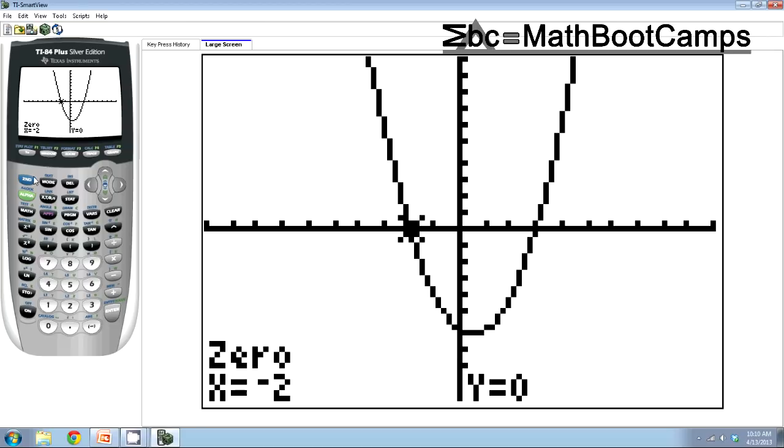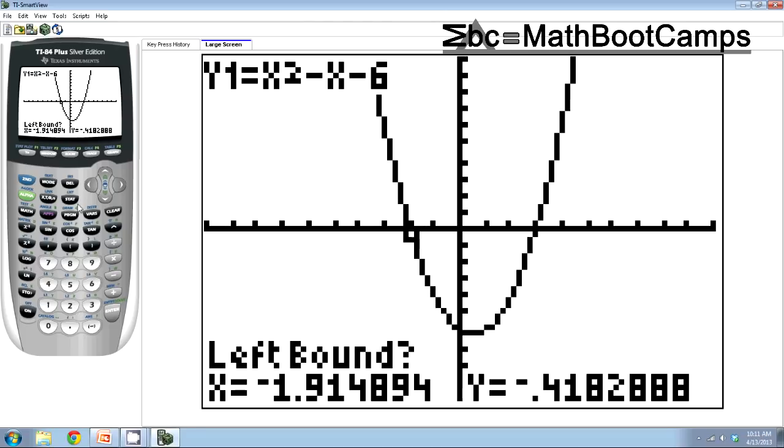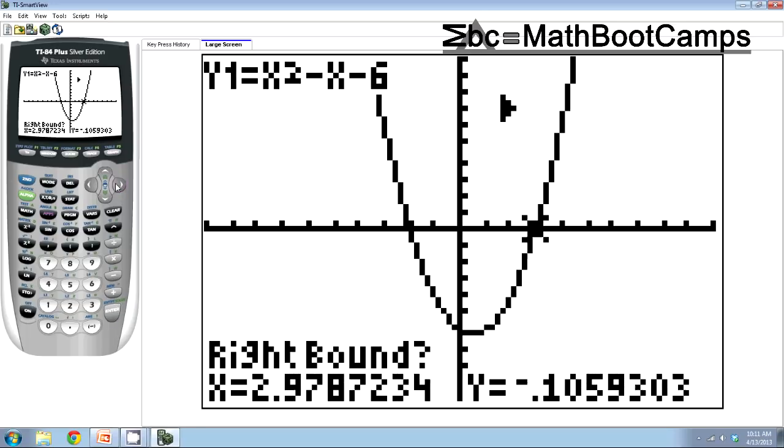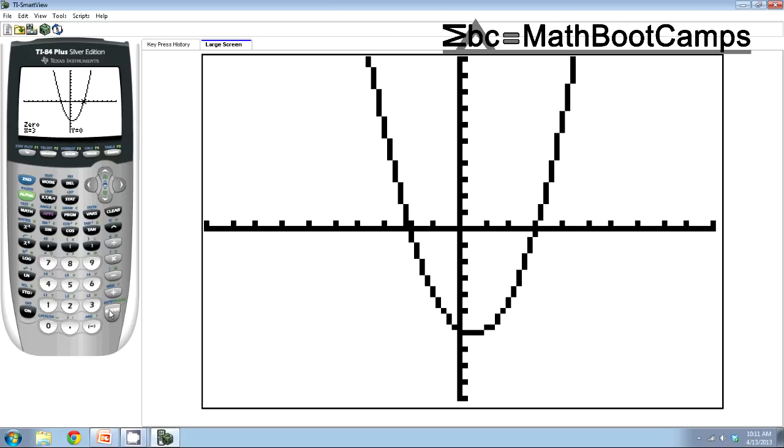And so I'm going to do the same thing. Second and trace, go back to zero because we're finding a zero of a function. This time the left-hand bound, I want to be on the left-hand side or below that other one. Obviously I already am, but I'm just getting a little closer. Okay. Right bound, I want to get above that. So there we go. And now it tells me to guess. I don't know. I'm just going to press enter. And then we get our other zero or intercept.